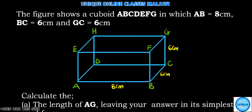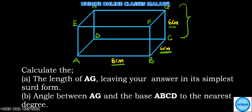This video question shows a figure, a cuboid ABCDEF, where AB is 8 centimeters, BC is 6 centimeters, and GC is 6 centimeters - that's the height. We've been asked to calculate the length of AG, leaving the answer in its simplest surd form.